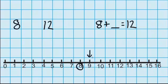So I've got 9, 10, 11 and 12. So that's 1, 2, 3, 4. So the answer is 8 plus 4 equals 12.